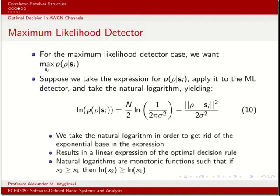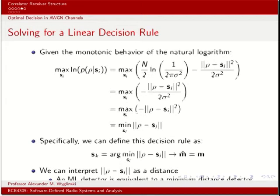After discarding the constant and the 2σ² denominator (neither affects the maximization), we are left with maximizing over Si of minus the magnitude squared of rho minus Si. Converting from maximizing a negative to minimizing the positive version, and dropping the square root since it doesn't change the result, we arrive at minimizing the Euclidean distance between the head of the rho vector and the head of the Si vector — i.e., the vector subtraction rho minus Si, whose squared length is our noise vector magnitude squared.